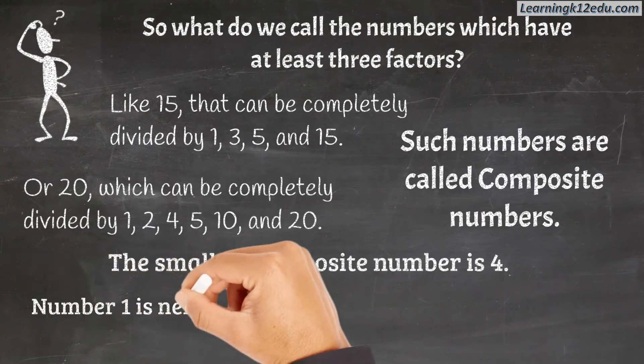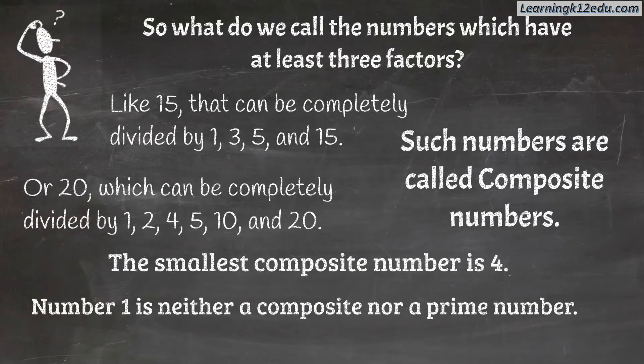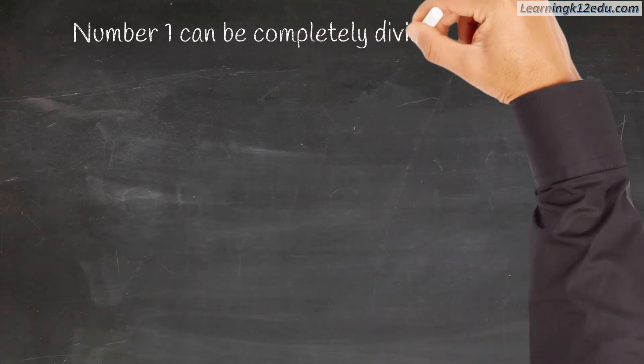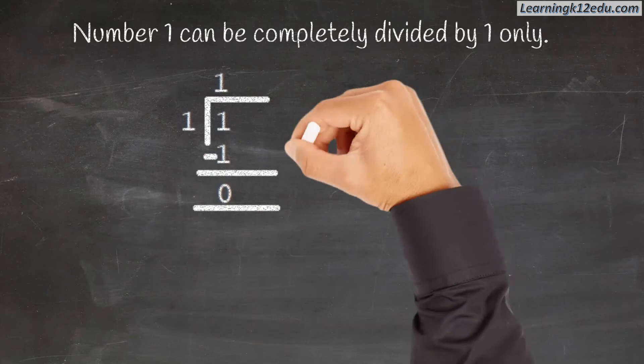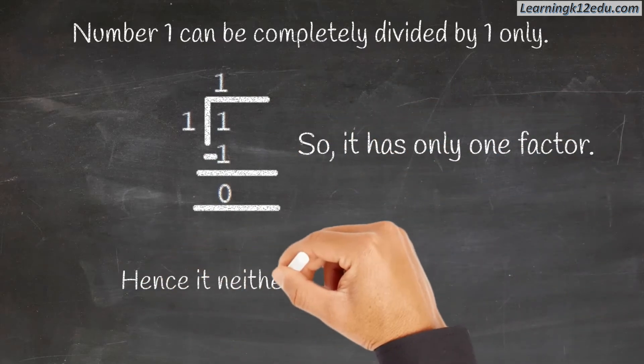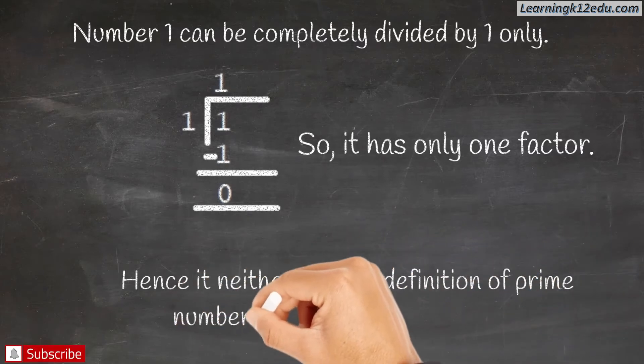Number 1 is neither composite nor prime. Number 1 can be completely divided by 1 only, so it has only one factor. Hence, it fits neither the definition of prime numbers nor composite numbers.